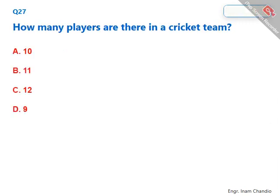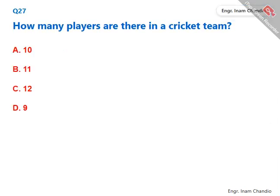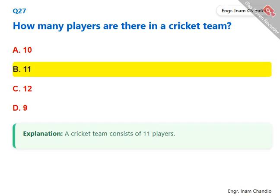How many players are there in a cricket team? A cricket team consists of 11 players. The correct answer is B. 11.